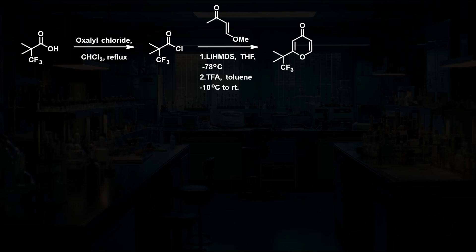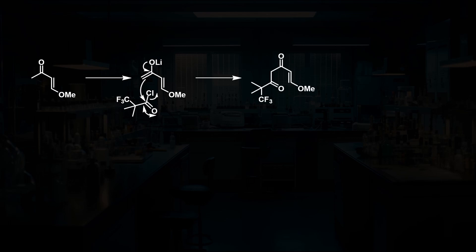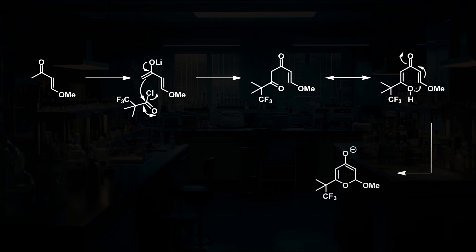Its synthesis begins with the conversion of this carboxylic acid to the corresponding acid chloride, which can be used in a cyclisation reaction with this enone to produce a pyrone. In this reaction, lithium HMDS is used to deprotonate the alpha position of the enone, forming an enolate species. This reacts with the acid chloride in a Claisen-type condensation, eliminating the chloride leaving group and reforming the carbonyl. This carbonyl can then tautomerise to its enol form, which allows the oxygen atom to take part in a conjugate addition-elimination reaction to form the pyrone.